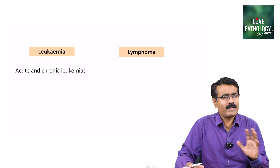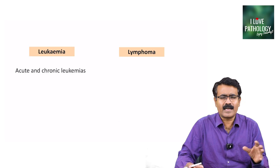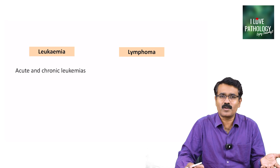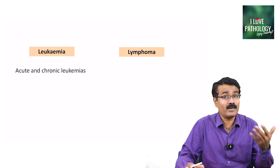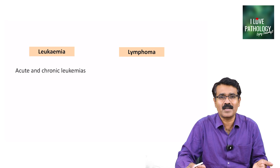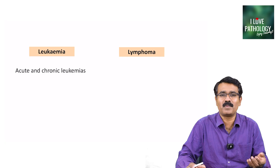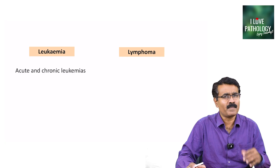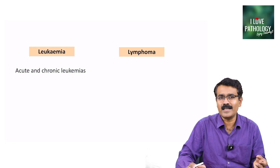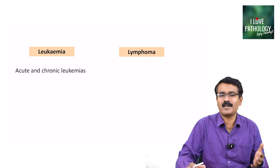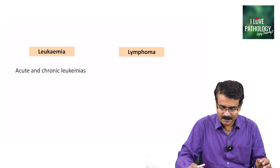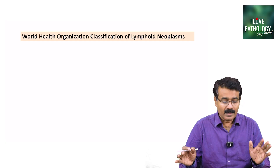Leukemias can be broadly categorized into acute and chronic leukemias. We have learnt about acute myeloid leukemia; we will be learning about acute lymphoblastic leukemia. The chronic leukemias are chronic myeloid leukemia and chronic lymphocytic leukemia.